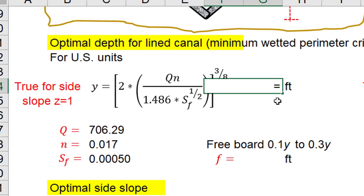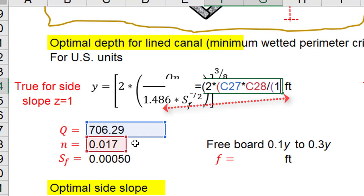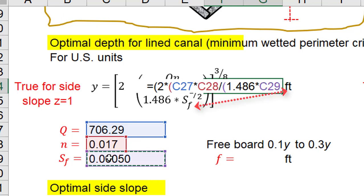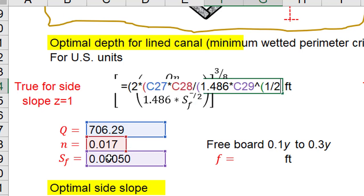In substituting data, the water depth is equal to 2 multiplied by flow design multiplied by roughness coefficient divided by 1.486 multiplied by longitudinal slope to the power of a half, all of this to the power of 3 eighths.